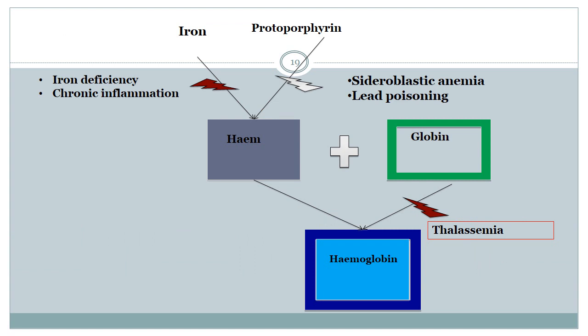Hemoglobin is composed of heme and globin. Globin is a protein formed of amino acids. Heme is an iron-containing protoporphyrin. Microcytic hypochromic anemia can result from defective hemoglobin synthesis — the defect may be in the globin chain (as in thalassemia), or in heme synthesis due to reduction of iron availability (iron deficiency anemia or anemia of chronic disorders), or due to reduction of protoporphyrin synthesis (as in sideroblastic anemia or lead poisoning).